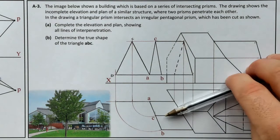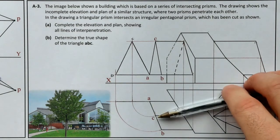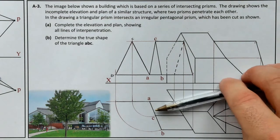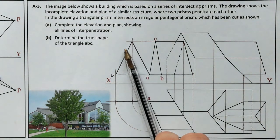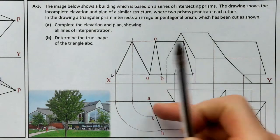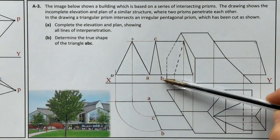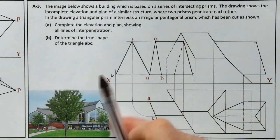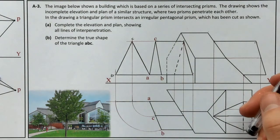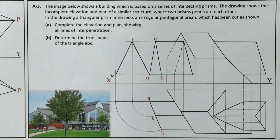We could have set up X1, Y1 parallel to the edge view, projected out the points, and taken heights from the elevation. There was a little bit of space, so we probably would have achieved that too. But the abatment method was probably the easiest one. Now we're going to move down to A4, which is at the bottom of the page.